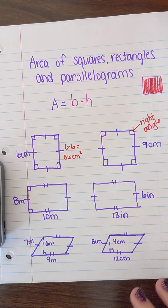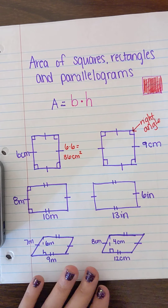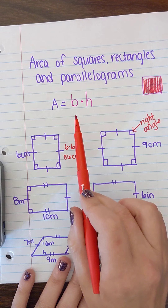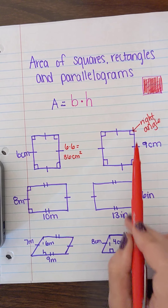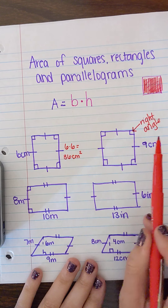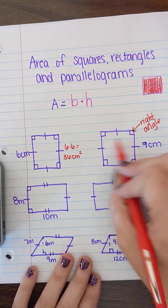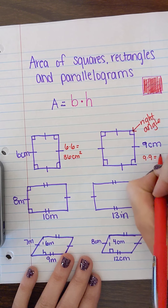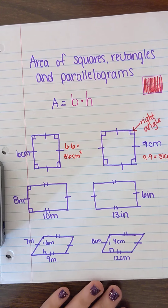Let's try that again. This shape has four equal sides and four right angles, so we know it has to be a square. Area is base times height, and we look for the right angle to tell us what the base and height are. All sides in the square are the same, so we're going to take 9 times 9, which gives us 81 centimeters squared.